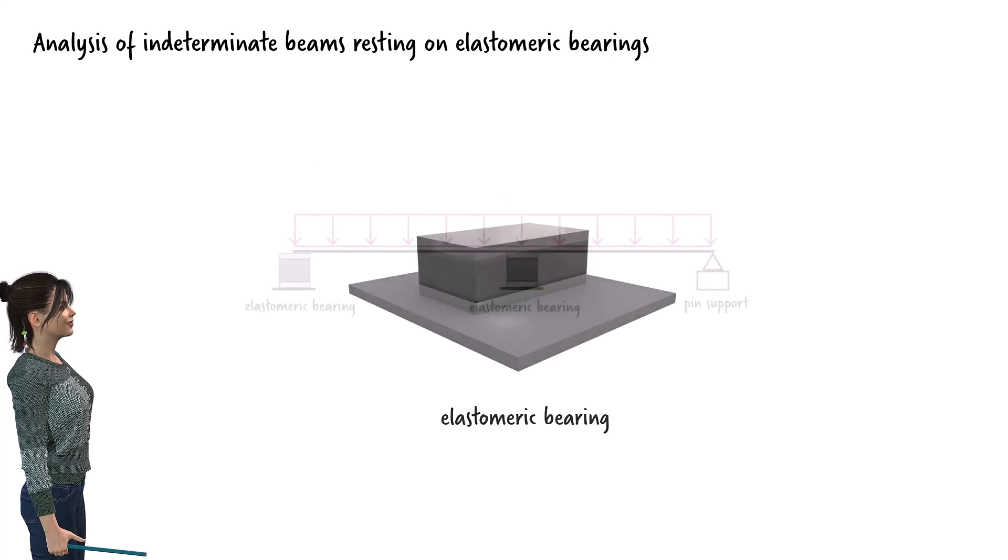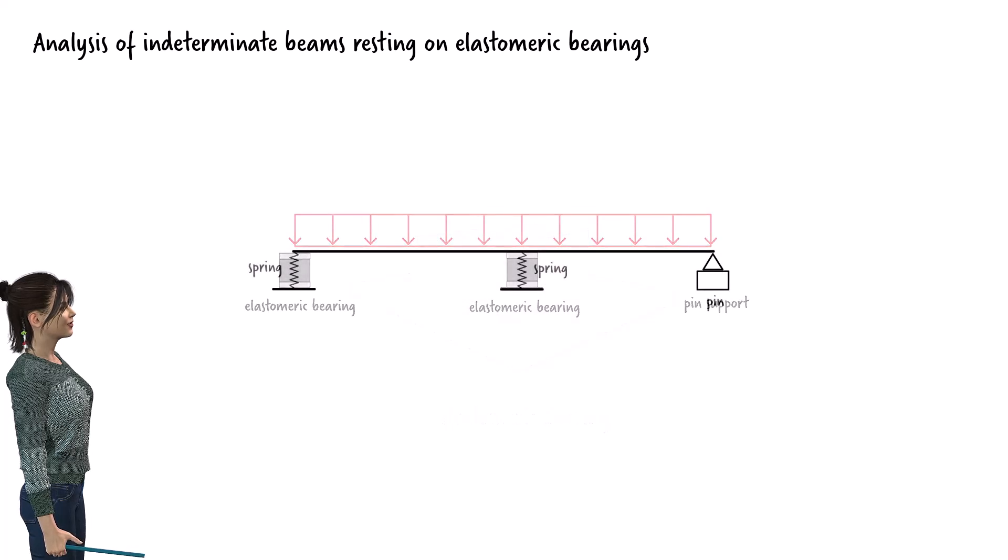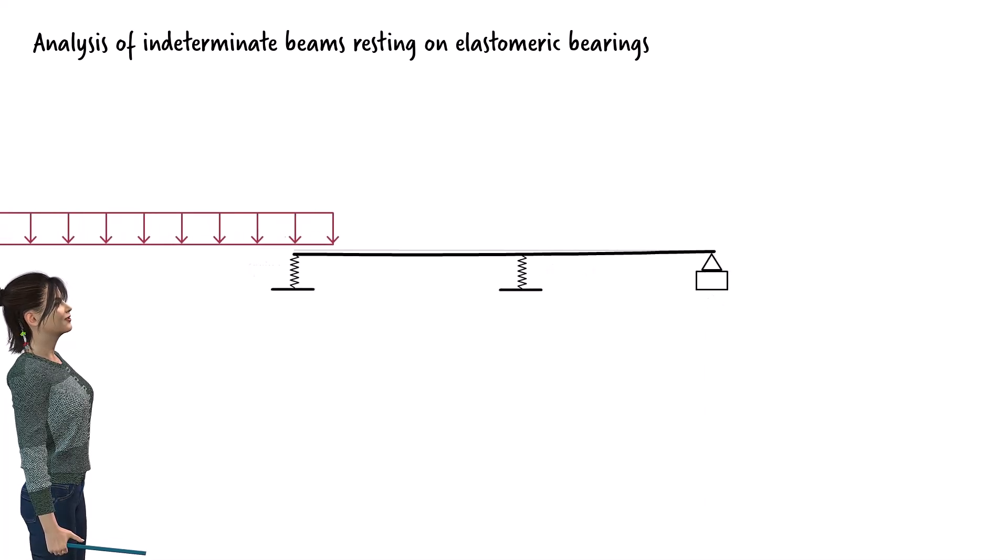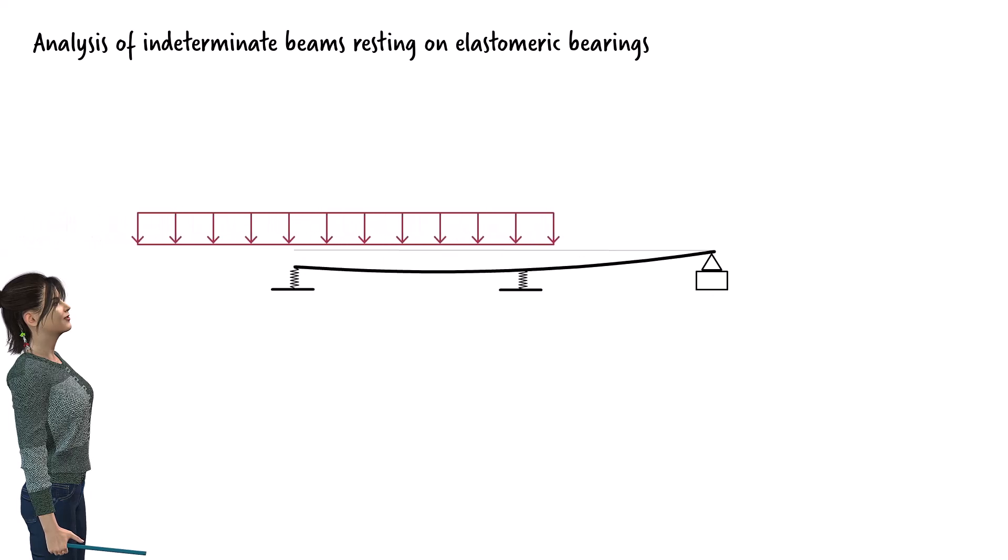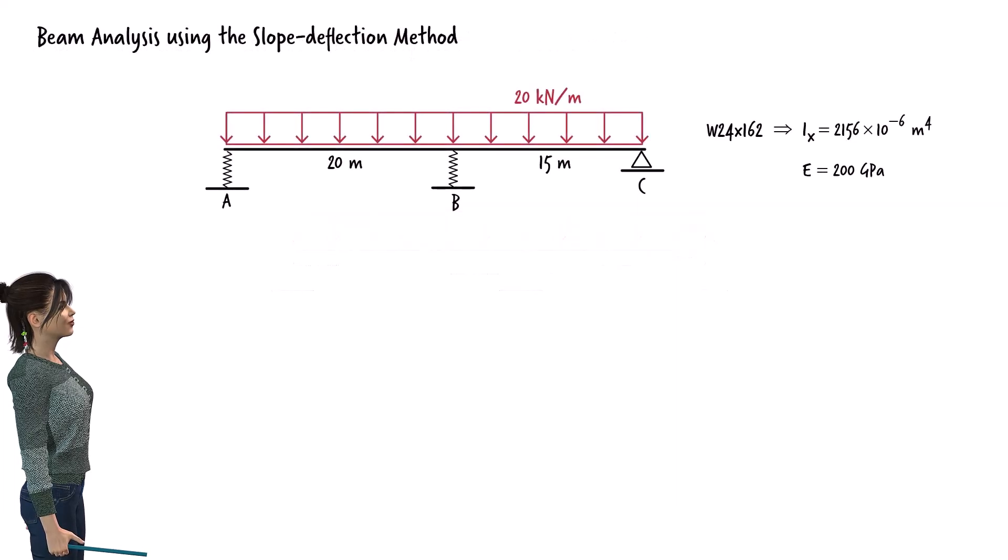For our analysis, we will model each bearing as an axial spring. The spring shortens when subjected to a downward load. In this case, as the train moves across the bridge, the beam ends displaced downward, causing differential settlement in each segment. These settlements influence the beam's support reactions and internal forces.